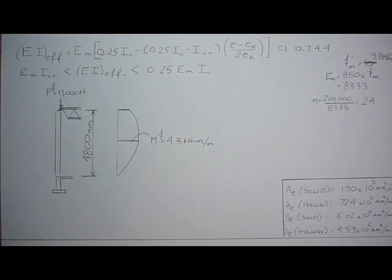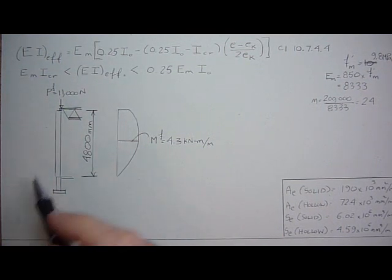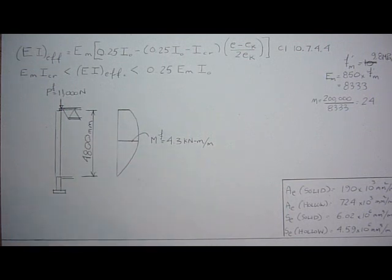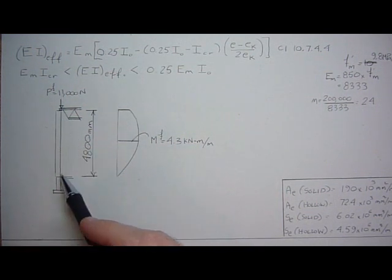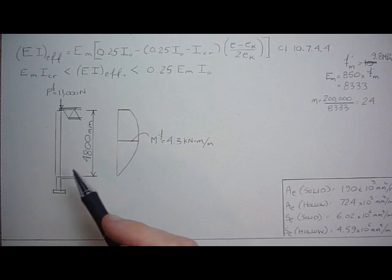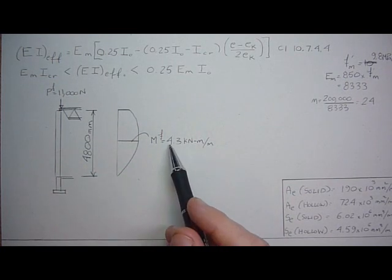Today we're going to carry on with the wall example and add slenderness. It's going to be 4800 millimeters in height. What we have to do is determine the P-delta effects, because as the wall deflects it adds more moment to the wall and amplifies this factored moment.